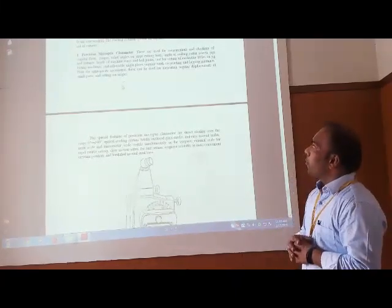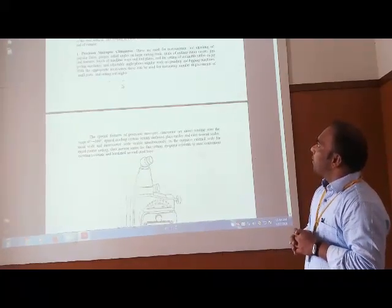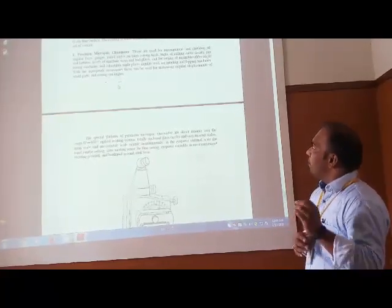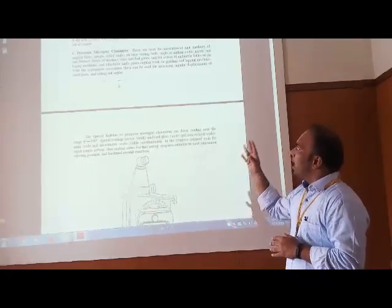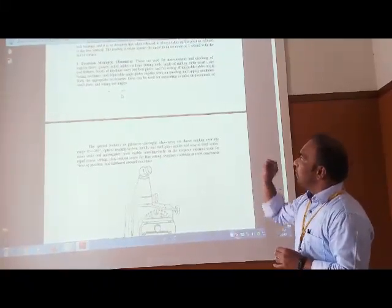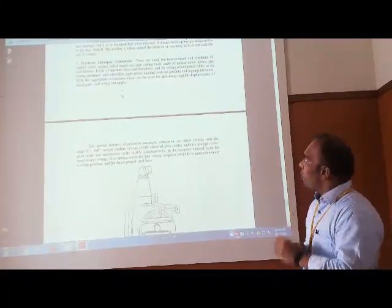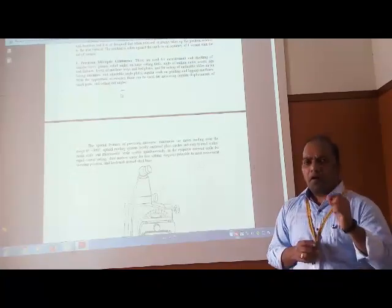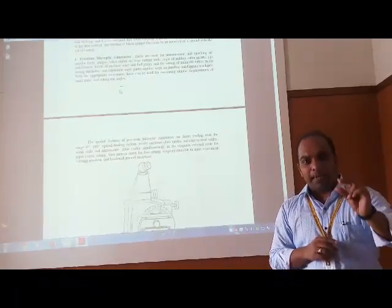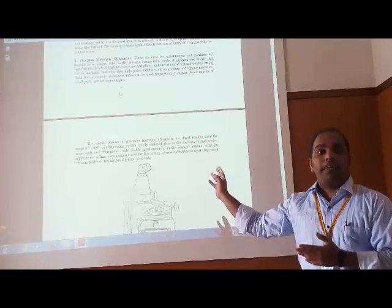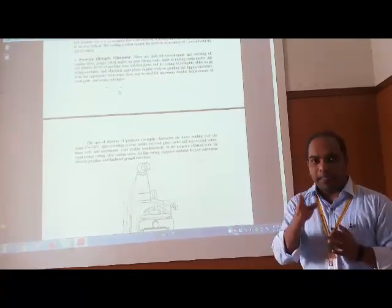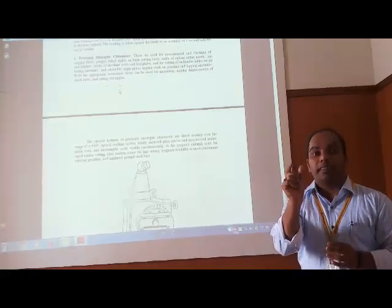Now, precision micro optic clinometer. These are used for measurement and checking of angular faces, gauges, and relief angles on large cutting tools, angles of milling cutter inserts, jigs, gauges, fixtures, level of machine ways and base plates, and for setting above inclinable angles on jig boring machines. With appropriate accessories these can be used for measuring angular displacements of small parts and setting out of angles. These clinometers will provide us smallest possible angles to largest possible angles. Already in the last angle measurement we have seen that 360 degrees is divided into 10 sub-intervals, that means every part will cover 36 degrees approximately.